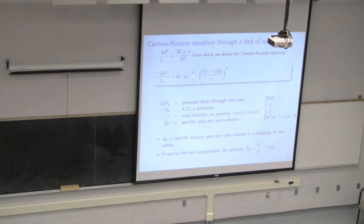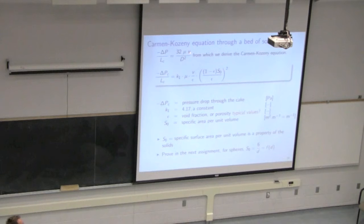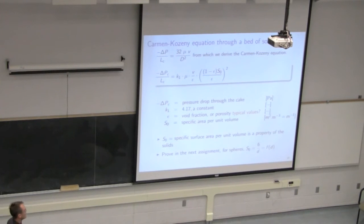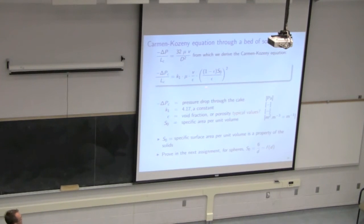We modify particularly the velocity, and we account for movement through a bed of solids packed with a certain void fraction E or epsilon. The diameter term from the original tube derivation is replaced — the fluid is no longer traveling through a tube of fixed diameter. There's a pathway through which it travels, and we state without derivation that the effective diameter is given by that term. It's a straightforward derivation found in every textbook.